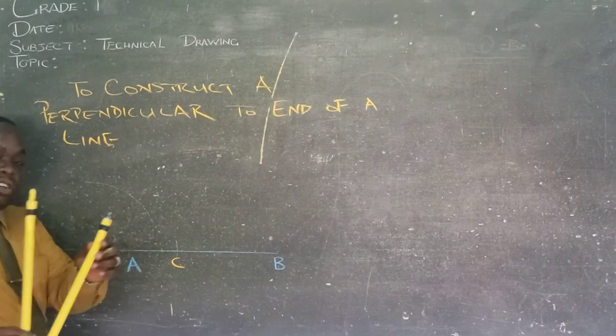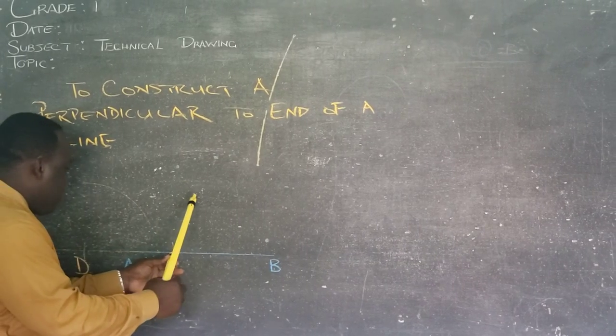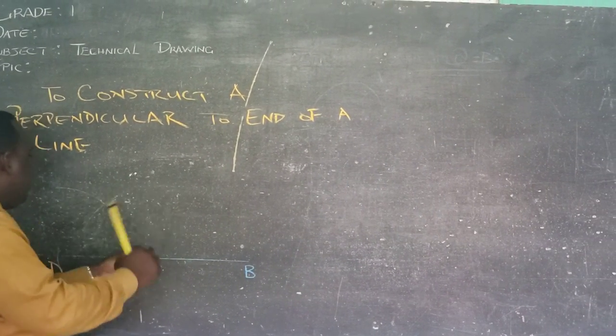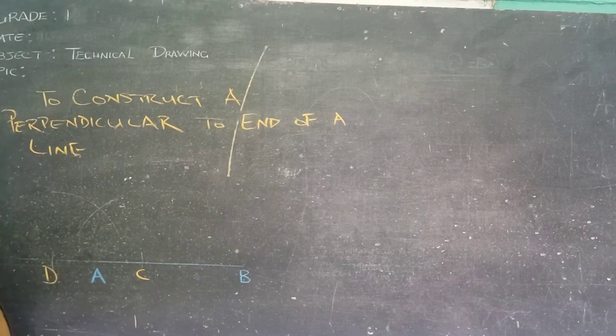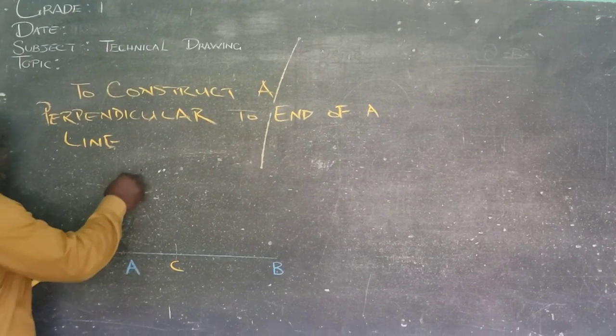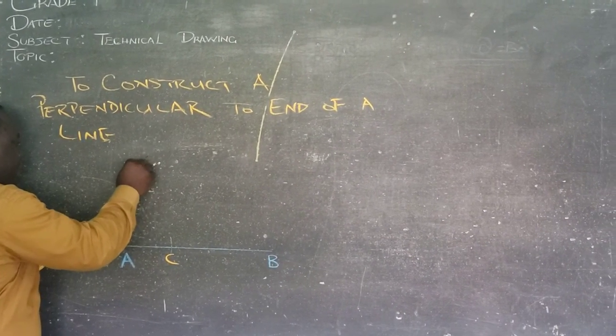And then I will now adjust, maintaining the radius of my compass. I will go to C and I will cut that arc. So A, B, C, D. This point now is referred to as E.